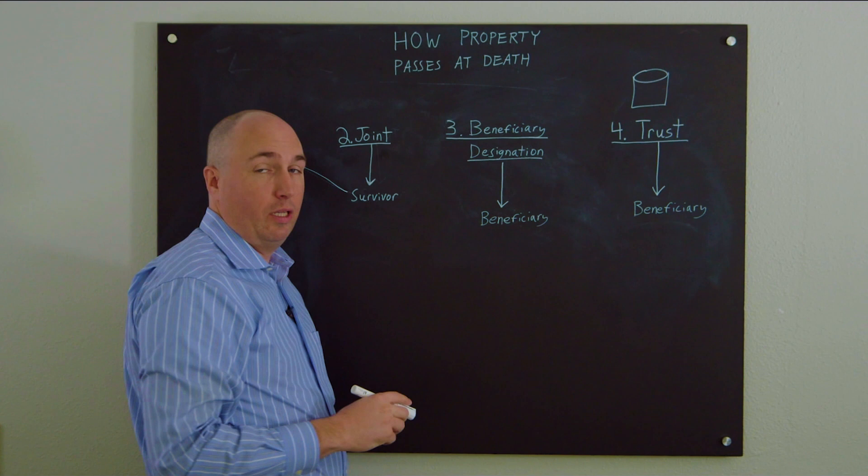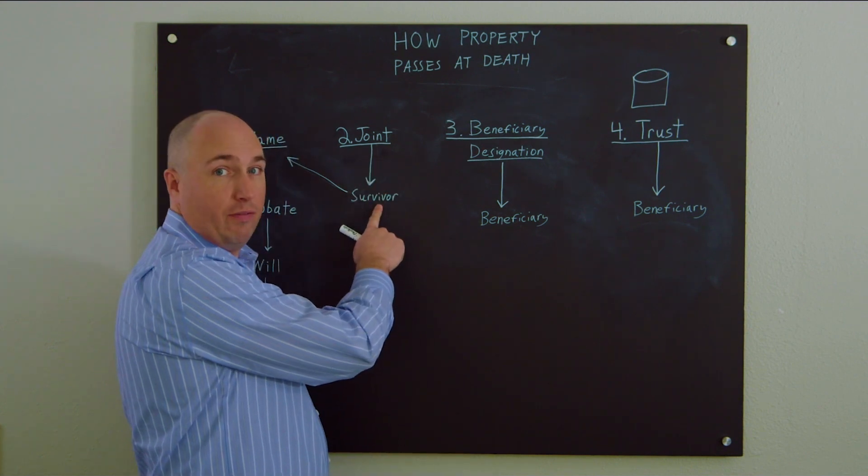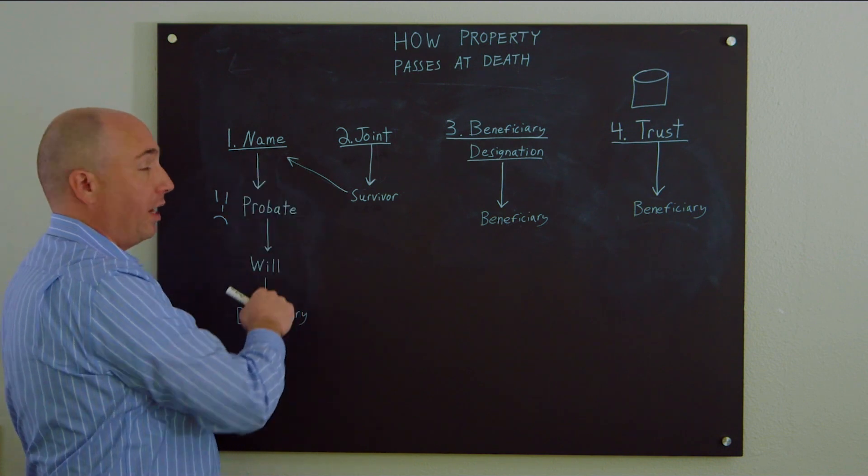Anything that you own jointly with more than one owner at your death will pass to the surviving owner, which means we're back in category one.